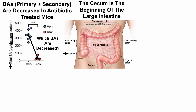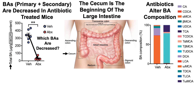That doesn't indicate which specific bile acids are decreased. Remember, bile acids are split into primary and secondary — they're not all the same metabolites. Looking at bile acid composition, antibiotics alter bile acid composition. In the non-antibiotic-treated mice, the major bile acids are deoxycholic acid (DCA, in purple) and omega-muricholic acid (omega-MCA, in orange).